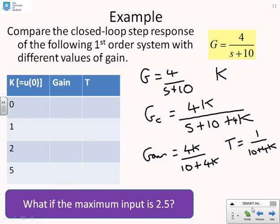Now I can see the steady-state gain is going to be 4K over 10 plus 4K, and the steady-state time constant is 1 over 10 plus 4K. I can put in the numbers. If K equals 0, the gain is 0, the time constant is 1 over 10. If K equals 1, the gain is 4 over 14, and the time constant is 1 over 14.